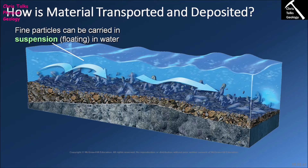The first thing we're going to think about is how do rivers transport material and why is that material deposited. The size of material that a river can move is dependent on the energy of the river — typically, the more energy a river has, the larger the material it can move. A river can move material either within the water or as part of the bedload, which is a collection of loose sediment along the bottom of the river channel.